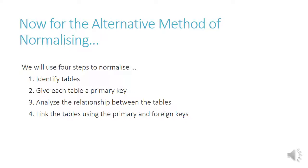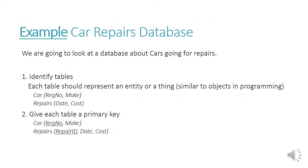The alternative method of normalizing is more intuitive than the previous method. We'll use four steps to normalize. First, identify the tables — look for entities that we can put into tables. Then we give each table a primary key. We analyze the relationship between the tables. And we link the tables using primary and foreign keys. We're going to look at a few examples.